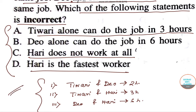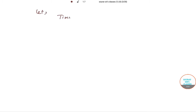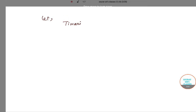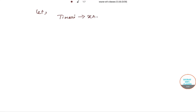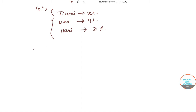To find the incorrect statement, we need to solve the equations. Let Tiwari finish the job in X hours, Dio finish the job in Y hours, and Hari finish the job in Z hours.